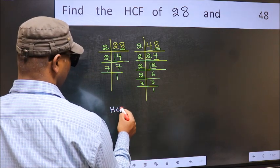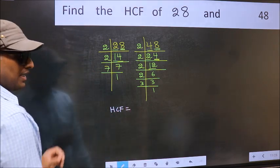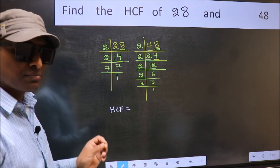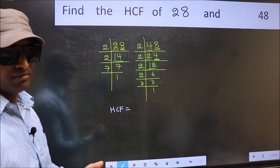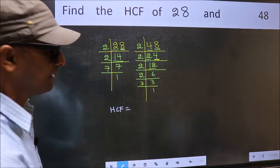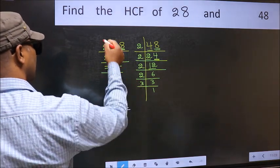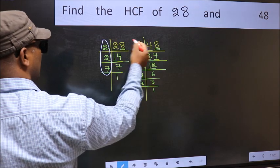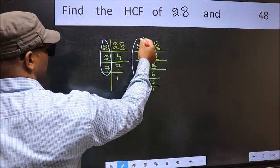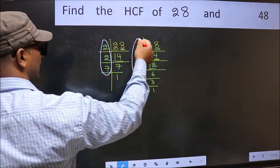Therefore our HCF is - HCF is the product of the numbers which should be present in these two places, that is here and also here, here and here.